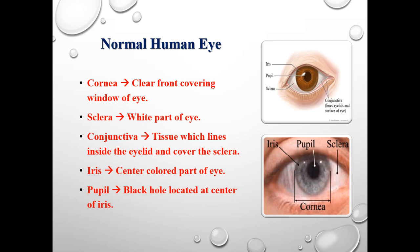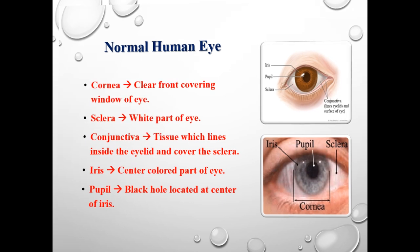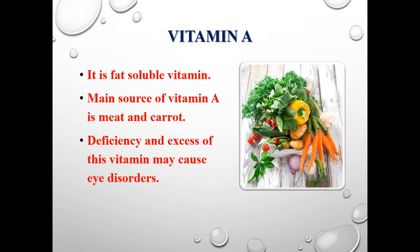The main function of the eye is to help in vision, or we can simply say to focus the light. Vitamin A also helps in vision through the visual cycle. Basically, vitamin A is a fat-soluble vitamin mainly present in meat and carrots. Alteration in the concentration of vitamin A in our body may cause eye disorders.